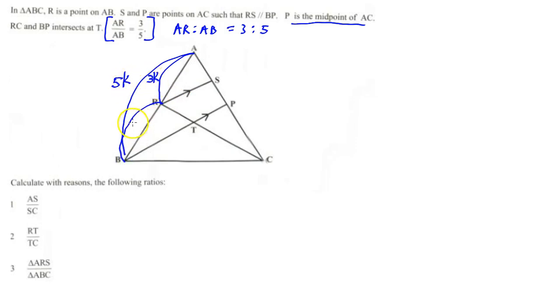If you just look at that, we can now actually say that RB is going to equal 5k minus 3k, which is 2k. Now what do they ask us to find? They said find AS over SC. If you look at AS now, and remember that these two lines are parallel, RS and BP, if we go across here we can now say that AS is 3k. We have to change the variable, so we'll call that 3p.